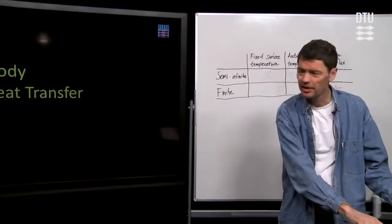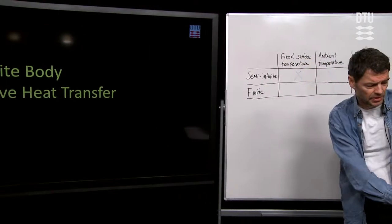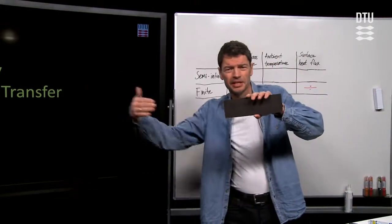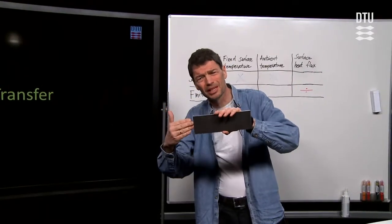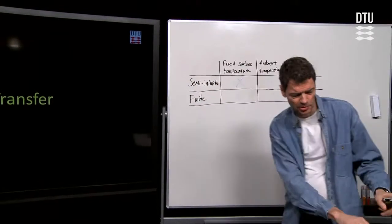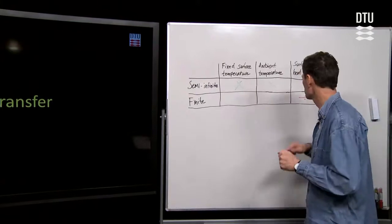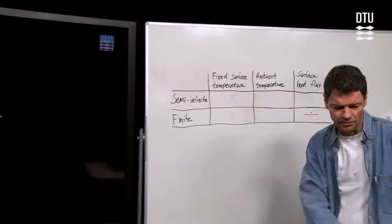So that was that case. The next case is that we have, again, a semi-infinite body. And then at the surface of material, it's a heat flux that is impinging onto the surface, like it could be solar gain that you have on the surface. For such a case, I'll just put a cross in our table here, so we can see that we are progressing.